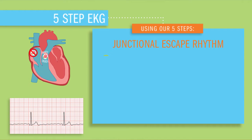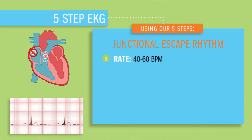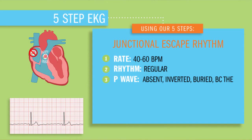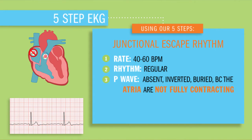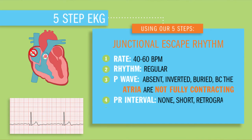So what does it look like on an EKG? Using our five steps, let's interpret this rhythm. For a junctional escape rhythm: the rate is going to be 40 to 60 beats per minute — relatively slow. The rhythm is going to be regular. The P waves are going to be absent, inverted, or buried, because the atria are not fully contracting — the impulse starts in the AV node, skipping the SA node area where the atriums are supposed to contract, so the ventricles are just contracting. There is no PR interval because there is no P wave and no atriums contracting. And lastly, the QRS should be normal.